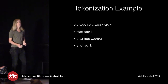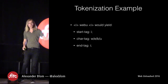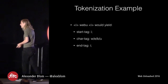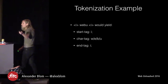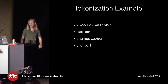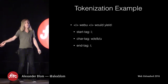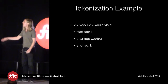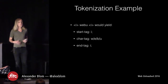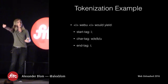Tokenization is how the browser reads what a node is. For example, an italic tag containing 'WebU' would be tokenized as a start tag of 'I', then four character tokens for W, E, B, and U, then an end tag of 'I'. That's how the browser tokenizes markup and passes that information up and down the stack.